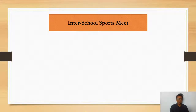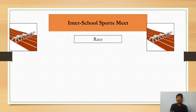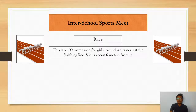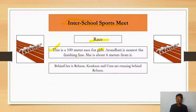Now let's begin the topic. There is an interschool sports meet. A 100-metre race for girls is going to be conducted. Arundhati is nearest to the finish line — she is about 6 metres from it. Behind her is Rehana, and Konkana and Uma are running further behind.